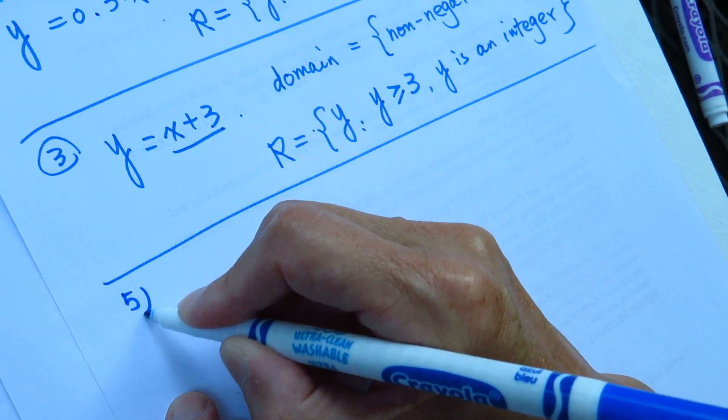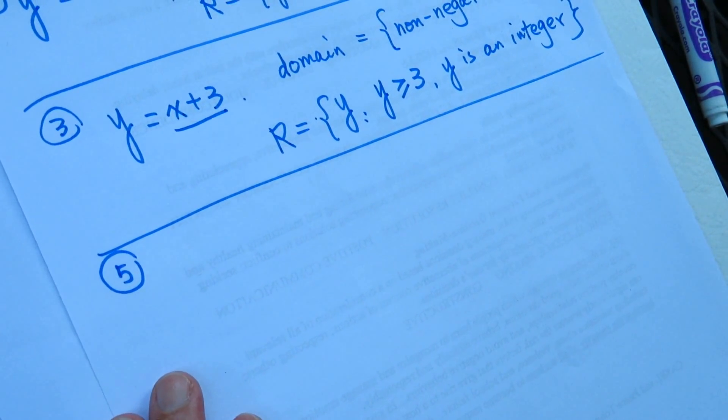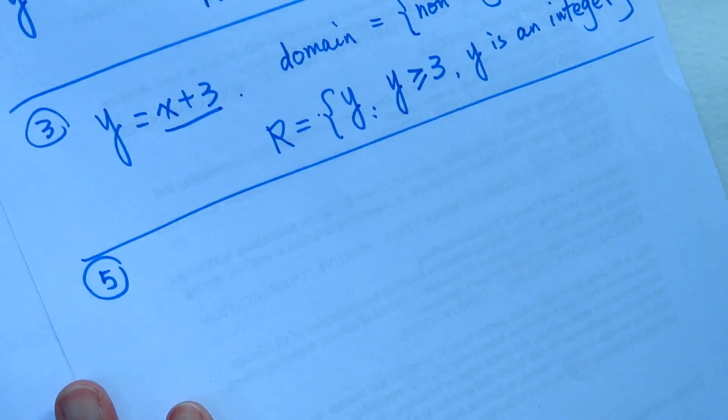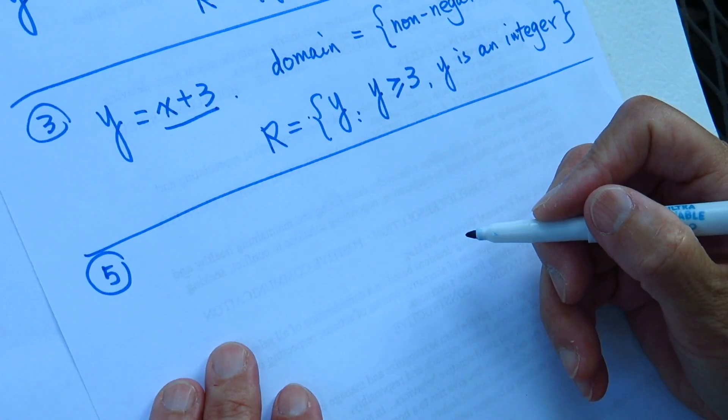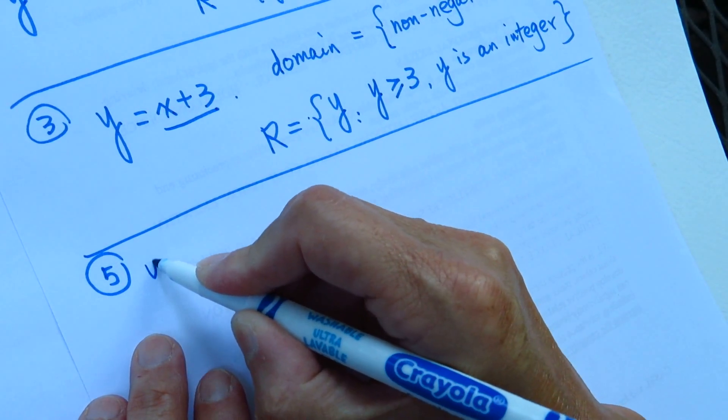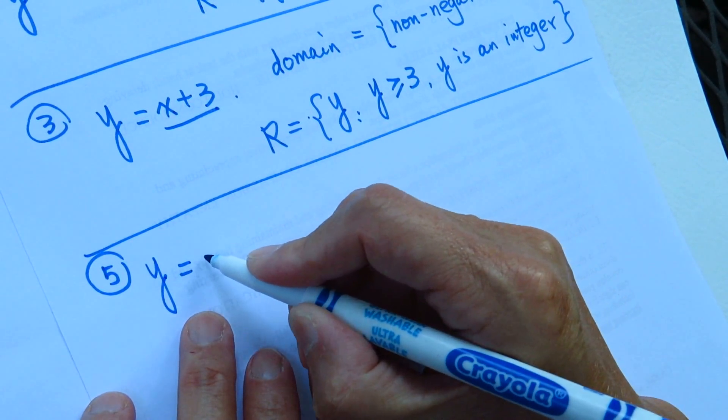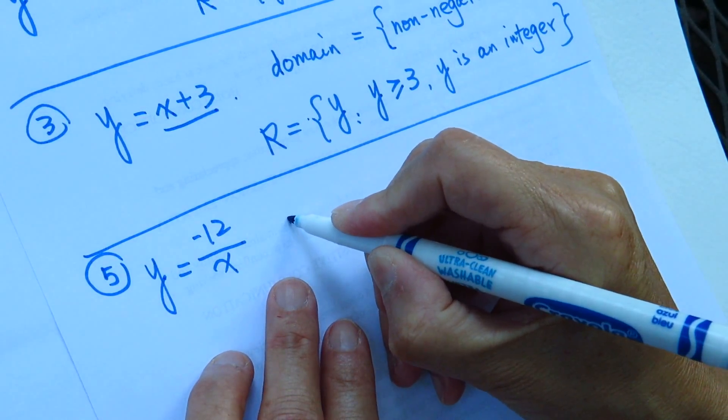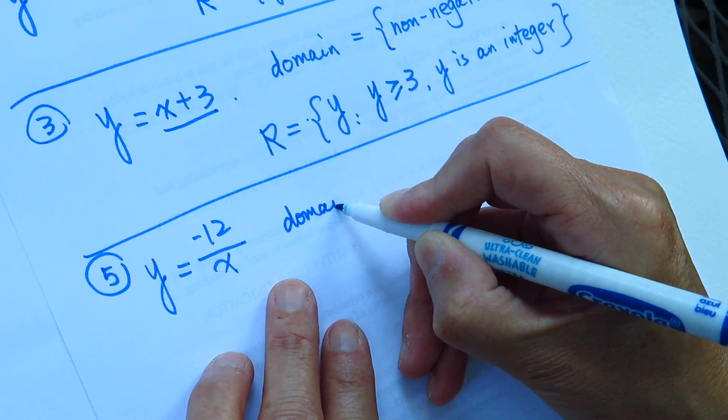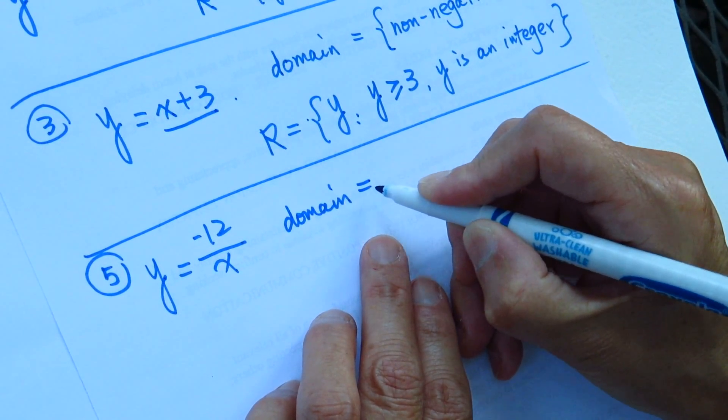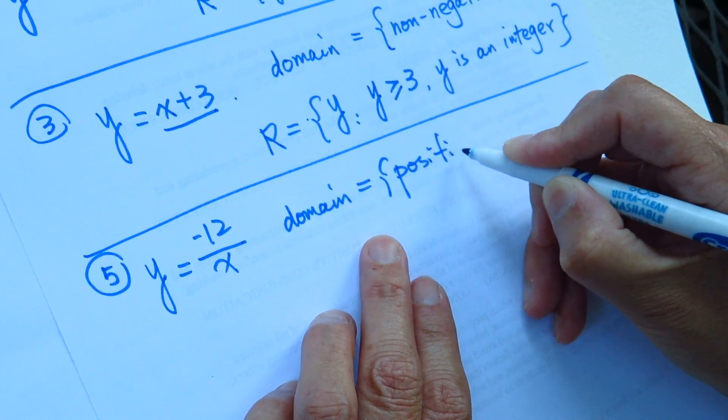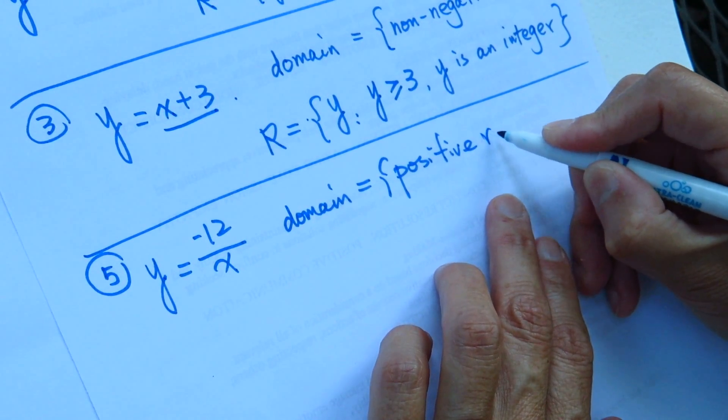Question number 5. Are we seeing it clearly? Okay. Try to make sure that you can see it. Question number 5. So you have y equal to negative 12 over x, and the domain is positive real numbers.